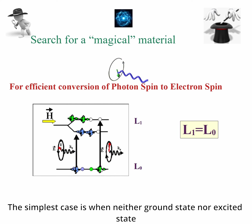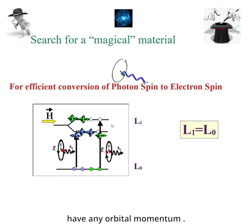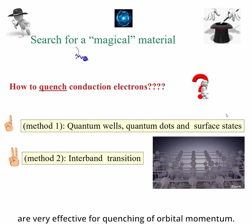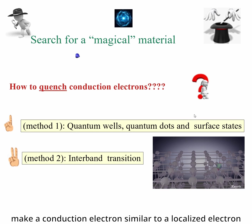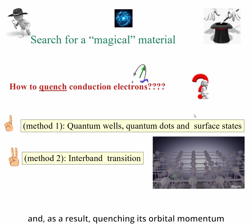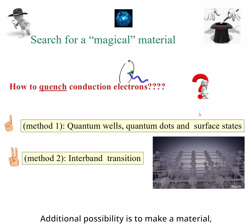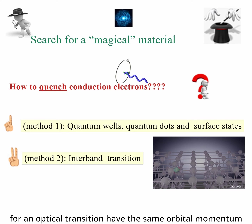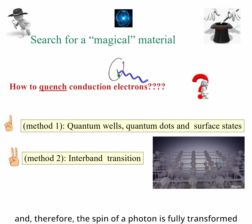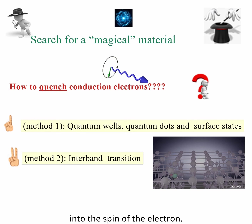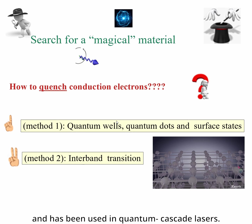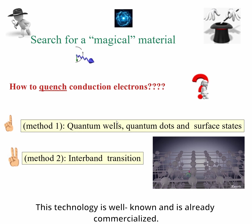It means that the difference between the orbital momentum of the ground electron state and the optically excited electron state should be nearly zero — ideally, the orbital momentum should be the same for both states. This property is rare in materials but can be designed or engineered. The simplest case is when neither the ground state nor the excited state has any orbital momentum. Quantum wells, quantum dots, and surface states are very effective for quenching orbital momentum, making conduction electrons similar to localized electrons and quenching their orbital momentum. An additional possibility is to use a material in which the ground and excited states belong to the same band, so their orbital momentum is identical and the photon spin is fully transformed into electron spin. Such an optical transition is called the interband transition and has been used in quantum cascade lasers — a technology that is well known and already commercialized.